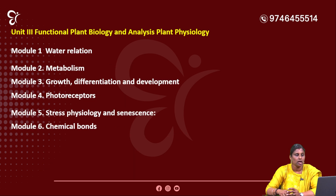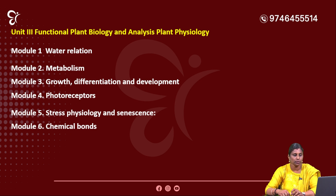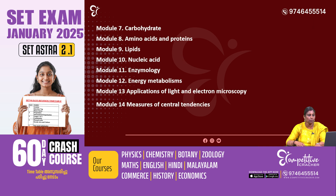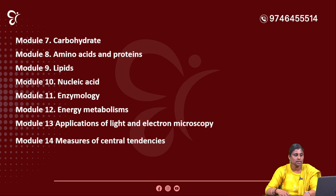Unit 3 is Functional Plant Biology and Plant Physiology. It has many modules: Module 1 Water Relations, Module 2 Metabolism, Module 3 Growth Differentiation and Development, Module 4 Photoreceptors, Module 5 Stress Physiology and Senescence, Module 6 Chemical Bonds, Module 7 Carbohydrates, Amino Acids, Proteins, Module 9 Lipids, Module 10 Nucleic Acids, Module 11 Enzymology, Module 12 Energy Metabolism, Module 13 Applications of Light and Electron Microscopy, Module 14 Measures of Central Tendencies.